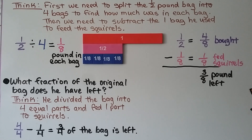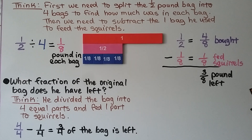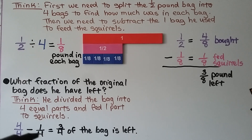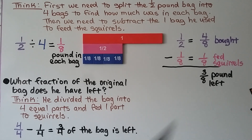What fraction of the original bag does he have left? He divided the bag into four equal parts and used one part, so four-fourths minus one-fourth equals three-fourths of the bag remaining. Notice how the fraction of the original bag, three-fourths, is different from the pounds he had left, three-eighths.